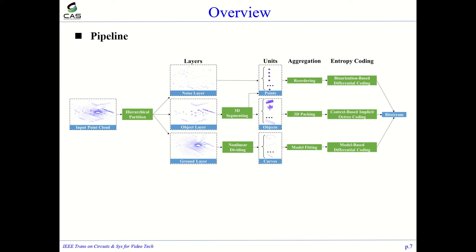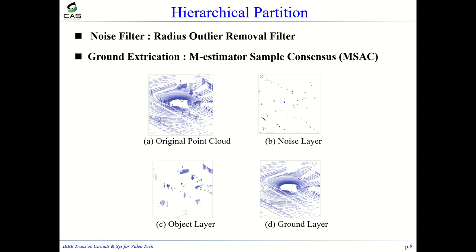The layer partition is responsible for dividing points into layers according to their properties. Firstly, outlier points are selected into the noise layer by a radius-outlier-removal filter. Then, applying a fitting algorithm, RANSAC is used to extract points as a ground layer. The remaining points are classified into the object layer.